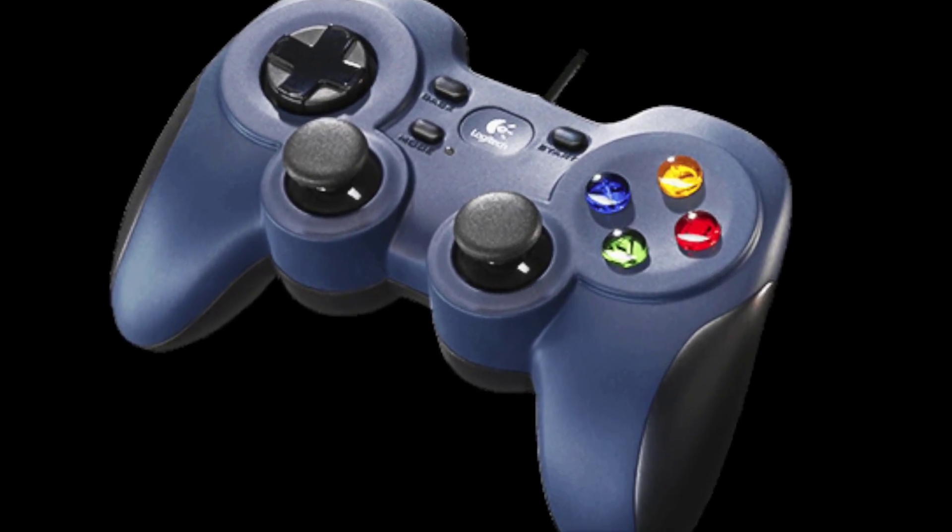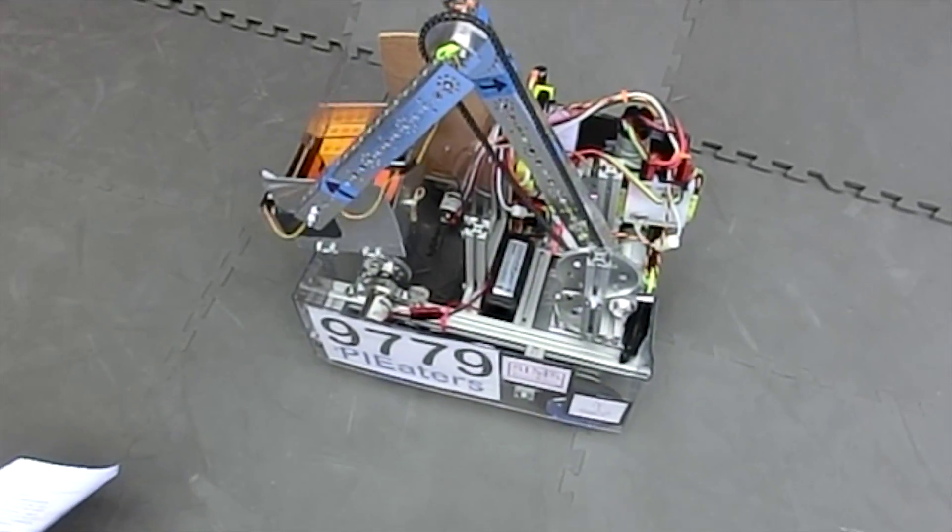Some of our programming highlights this season include coding our X button to allow either side of the robot to be the front, so either side can be the collector or the climber. We also programmed button B to automatically rotate the arm and move the collection hamper into a position to collect debris.